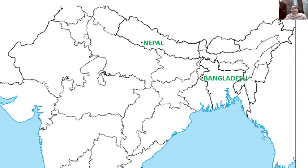Let's do a small recap of what we have learned in today's class. Can you identify the map? This is the political map of India. You have to identify West Bengal in this map. You have already learned to locate different states on the political map of India. West Bengal is located on the eastern part of India and also on the east coast of India.